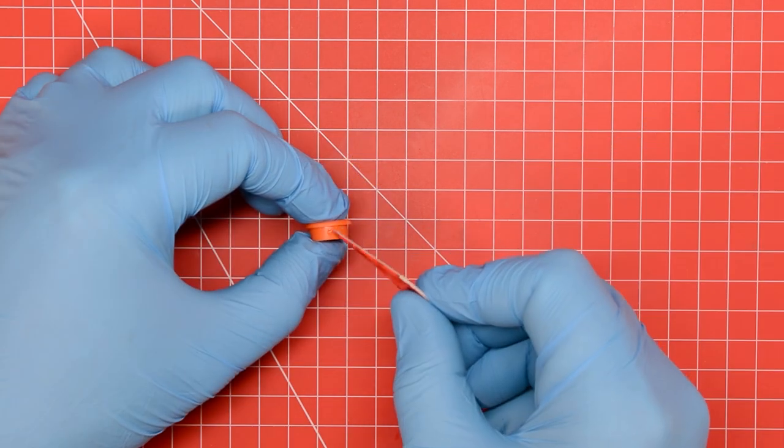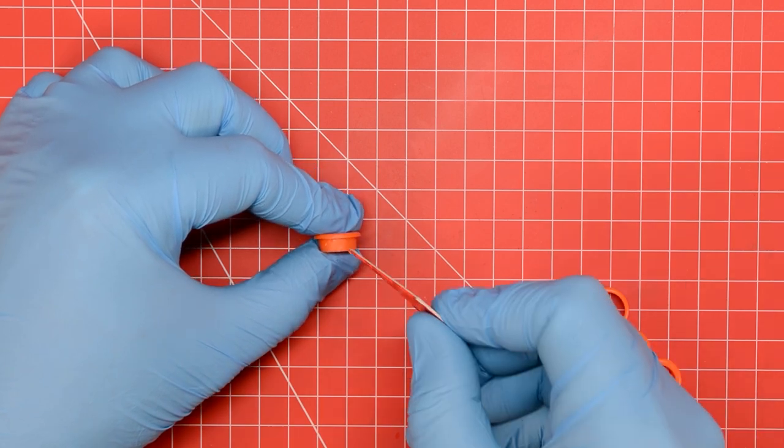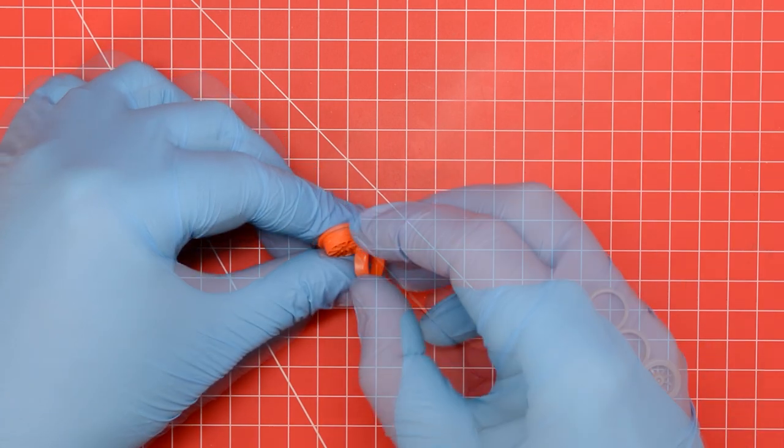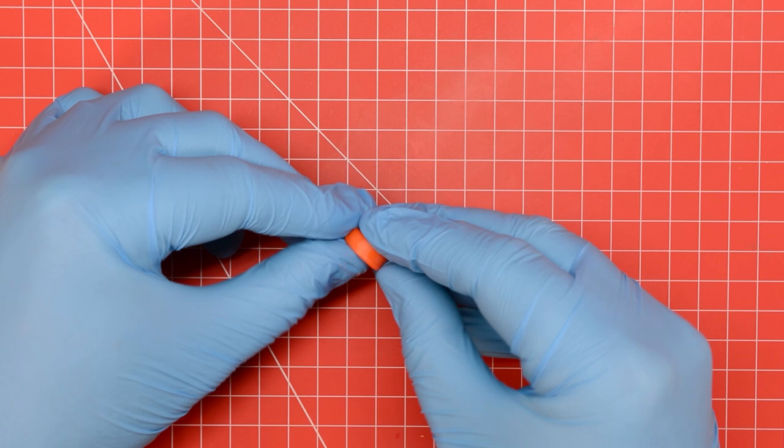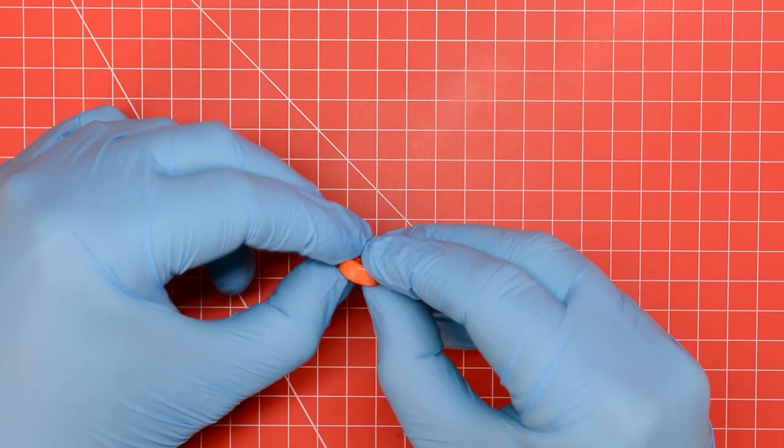Once the cleanup is complete some poly cement can be added around the inside face of the wheel and then the tyre can be pressed into position and held for a few seconds while the glue takes hold.